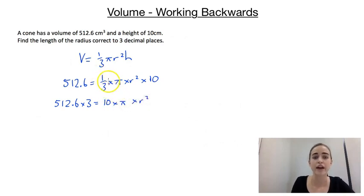So multiplying by three got rid of that third, and then I've just rearranged these to get these two bits on their own. So now I can divide by the 10 and the π. So I'm going to have 512.6 times 3 divided by 10 times π, and that's going to give me r².